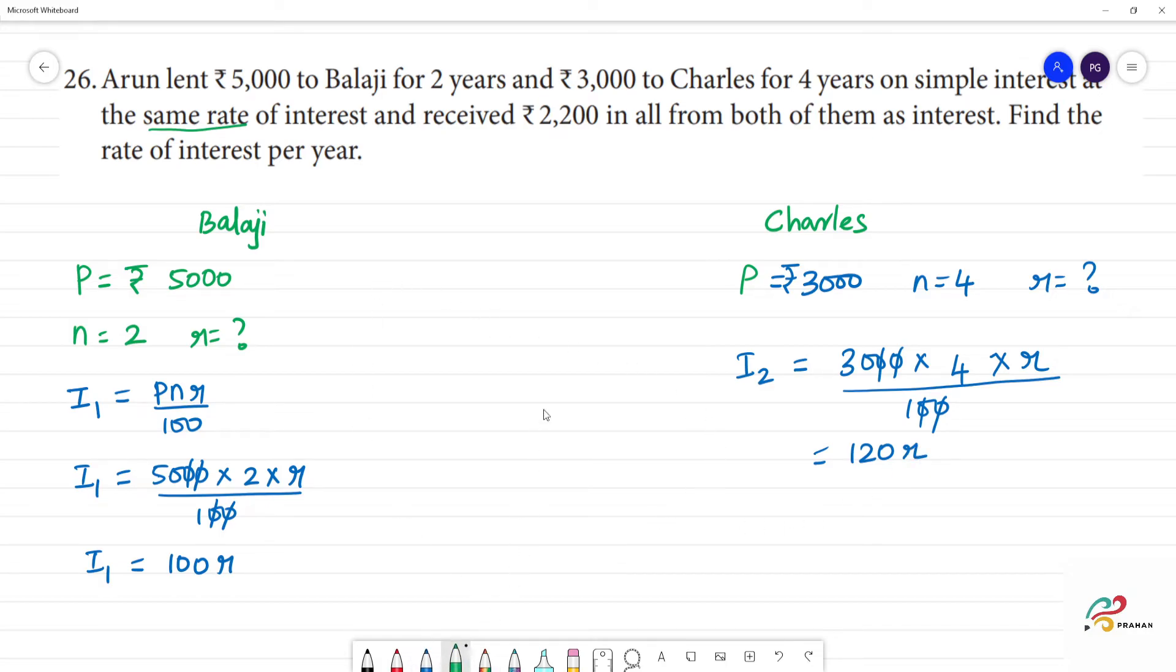Now the data given is interest received 2200 in all. That means I1 plus I2 is equal to 2200 rupees. I1 is 100R plus I2 is 120R equals rupees 2200. Now 100 plus 120 is 220. 220R equals rupees 2200. So R equals 2200 divided by 220.